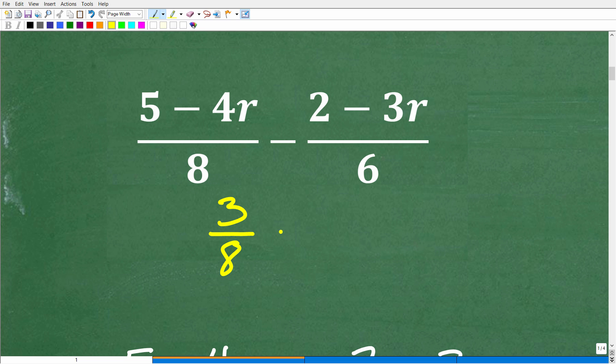again, we kind of go back to my problem here, 3 over 8 minus 1 over 6. What we need to do is find the lowest common denominator. So we don't have the same denominator. You can only add and subtract fractions when you do have the same denominator. So that's what we're going to have to do.